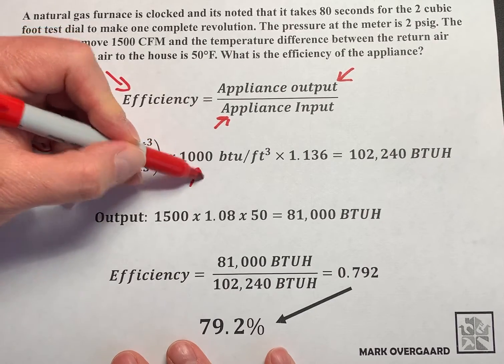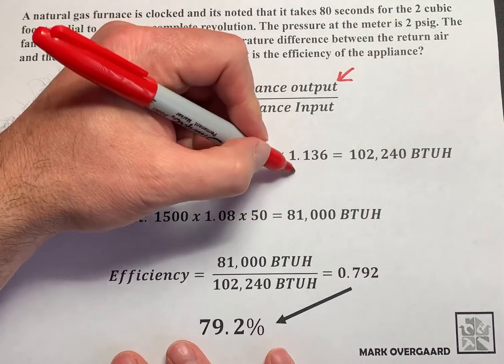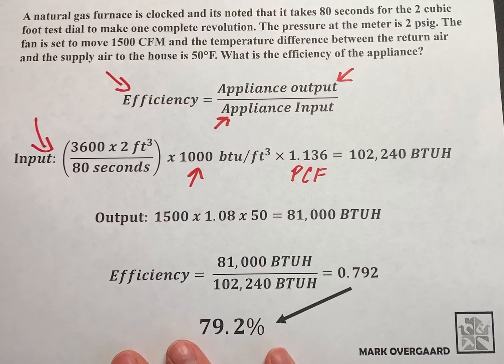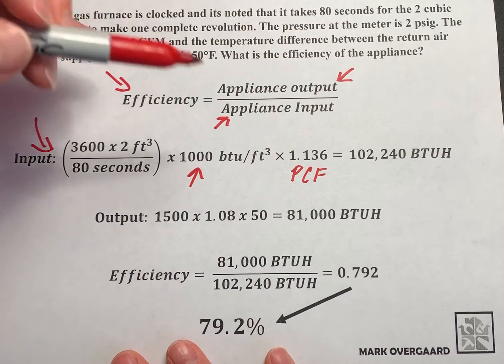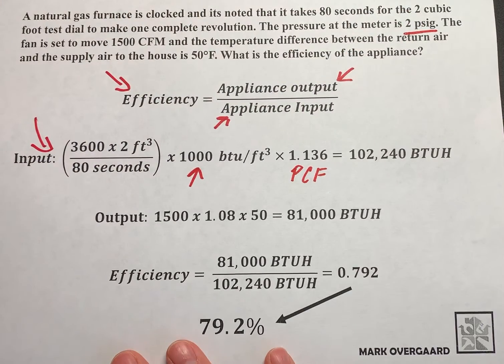1,000 BTUs per cubic foot. That is your calorific value for natural gas and the 1.36 is your pressure correction factor. We need that because the pressure at the meter is over half a psi or it's high pressure and it is in fact 2 psig.